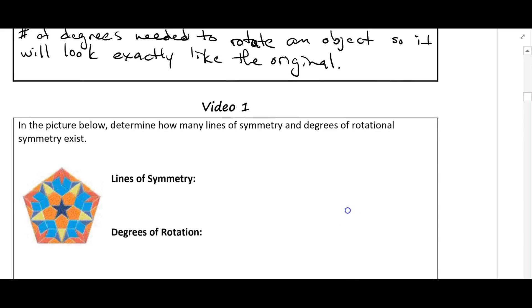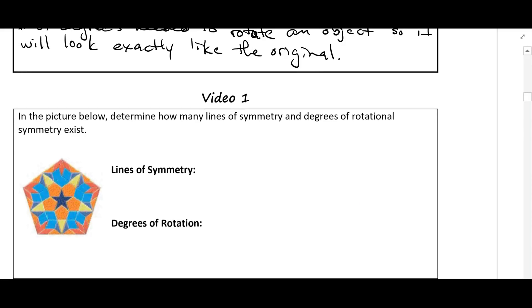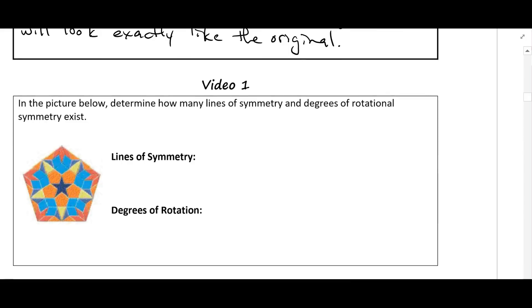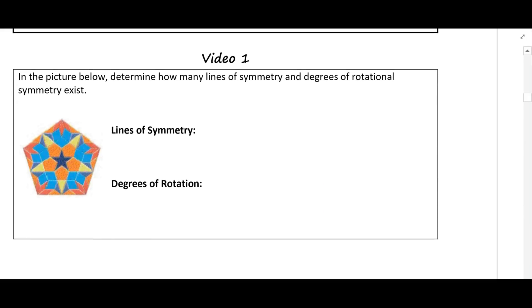So let's take a look at this picture. In the picture below determine how many lines of symmetry and degrees of rotational symmetry exist. So for our lines of symmetry we want to draw in some dotted or dashed lines that divide it exactly in half. So let's draw one right down the middle. So now I know the left and the right half are exactly the same. If I folded it in half they would match up exactly.